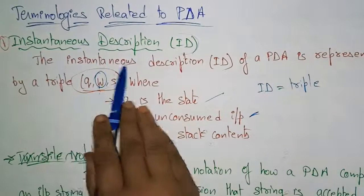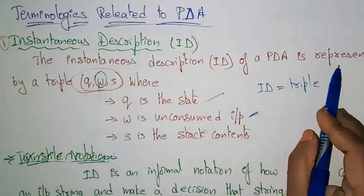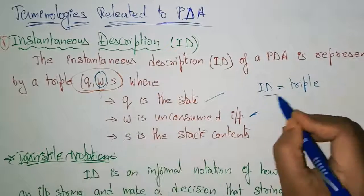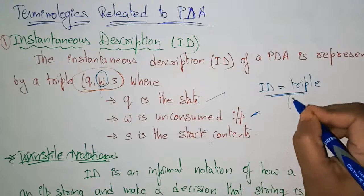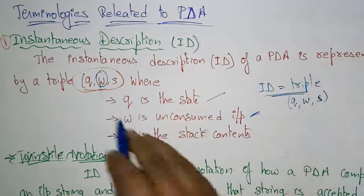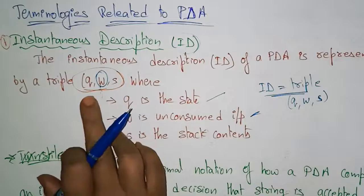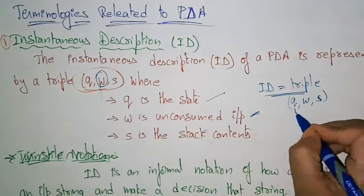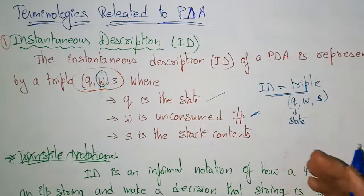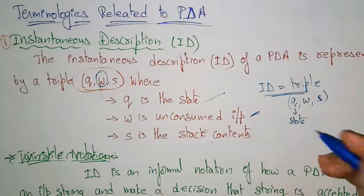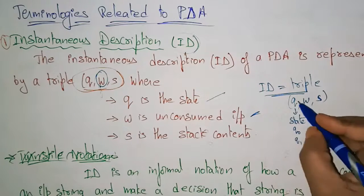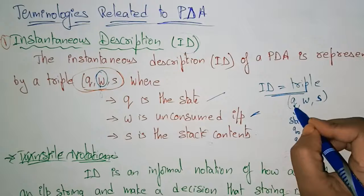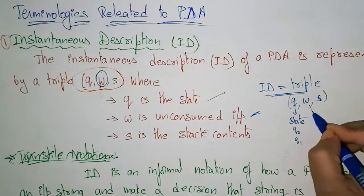The instantaneous description, or ID, of a PDA is represented by a triple. That means three terms will be there: q, w, s. Q is nothing but the state — the state you are currently in. You start with the initial state q-naught, and if the state is changing, you write it as q1, and so on. So q represents the current state.